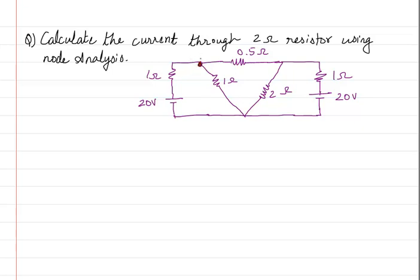Let me first name the nodes. I will name this first node as VA. This is the second node — let me name it as VB. Now, you have to be careful because this one we are marking as the reference node.